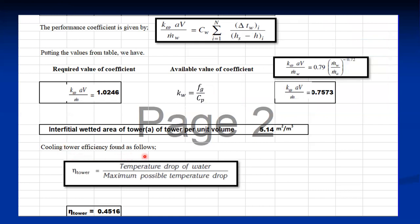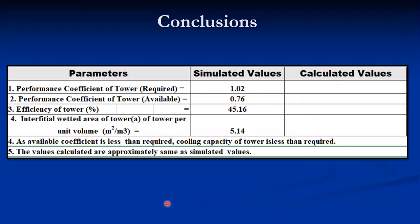The cooling tower efficiency is obtained using the formula: efficiency = actual temperature drop / maximum possible temperature drop. Actual temperature drop of water = inlet temperature − outlet temperature (already measured). Maximum possible temperature drop = inlet water temperature − WBT of entering air = 27°C. Putting all values in, the tower efficiency comes to approximately 0.45. The final results are: performance coefficient (required/demand value) = 1.02, and performance coefficient (available value) = 0.76.